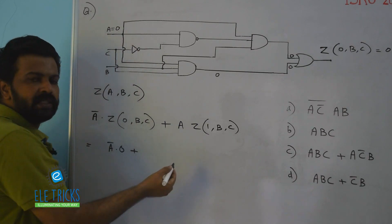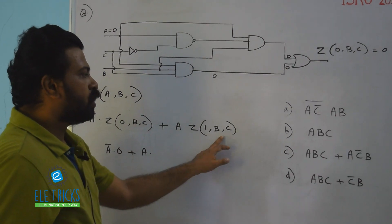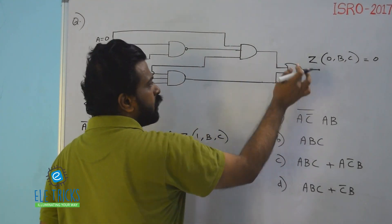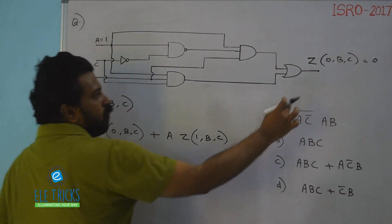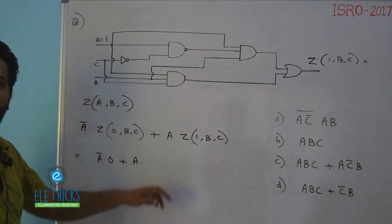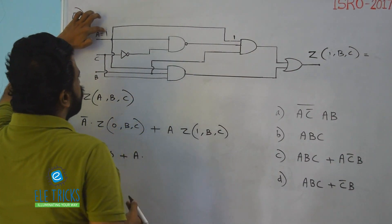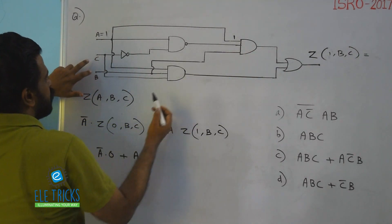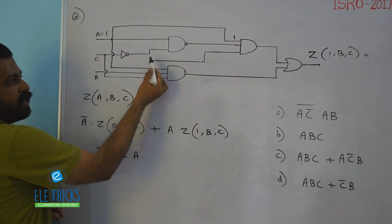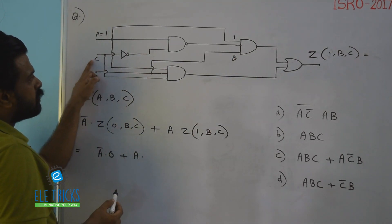Now we need to evaluate Z(1, b, c). Exactly the same approach: replace A by 1 in the circuit and compute the output. Once A is set equal to 1, look at the first AND gate — one input is 1. The other input to this AND gate is B, since line B is directly connected to it. Then C is connected to a NOT gate, giving C-bar.